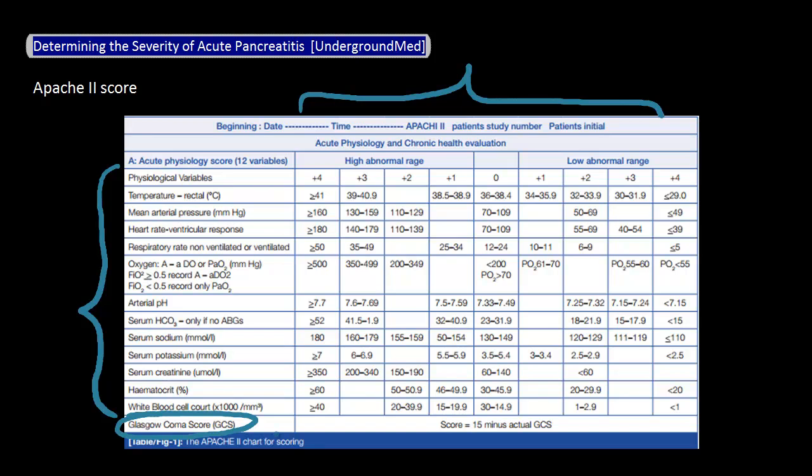Unlike Ranson's criteria, which takes 48 hours to complete, you can use the APACHE 2 right away, and can actually trend the values to determine if your patient is getting better or worse, which is nice.